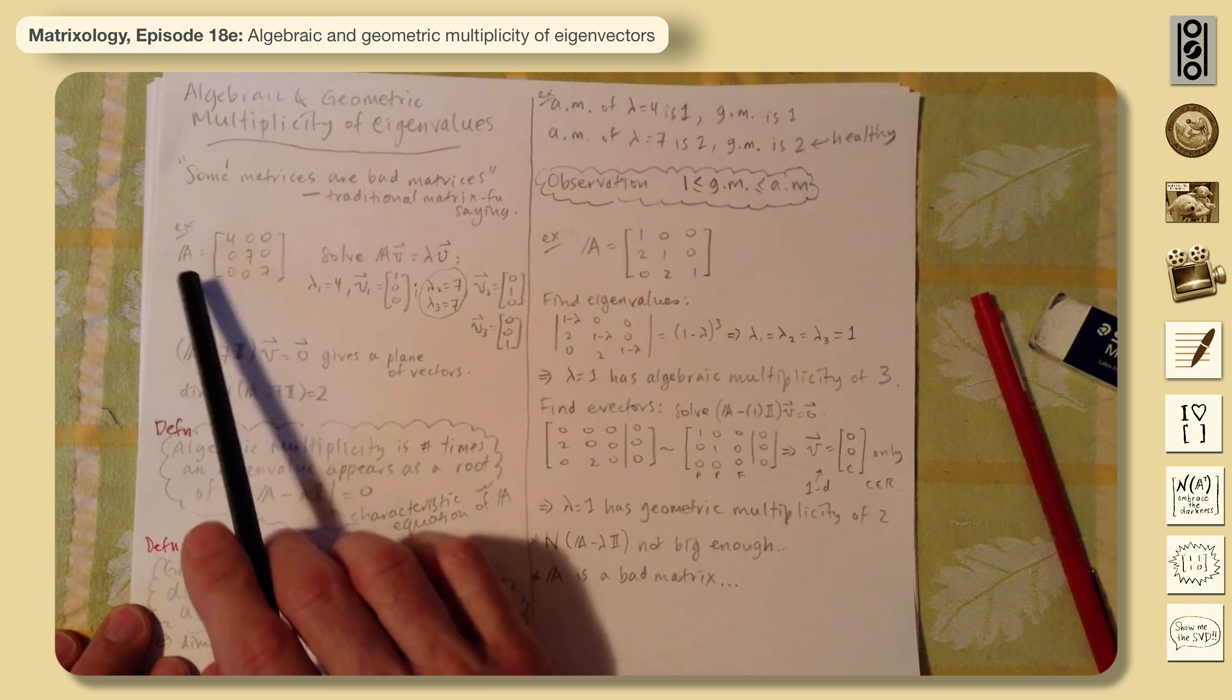And any vector pointing in the x direction will simply be amplified by a factor of 4. So it likes to grow things, but it disproportionately grows them in the y-z plane. So the dimension of that null space is 2.